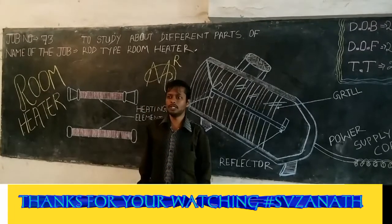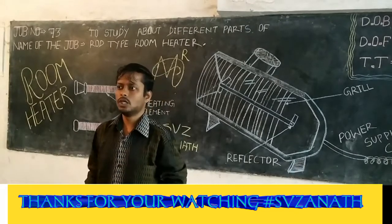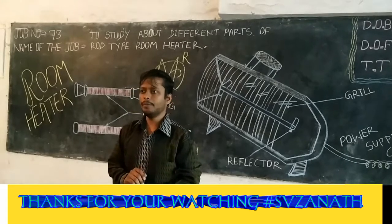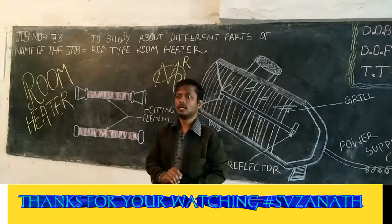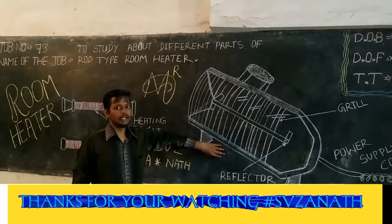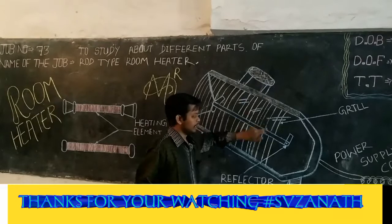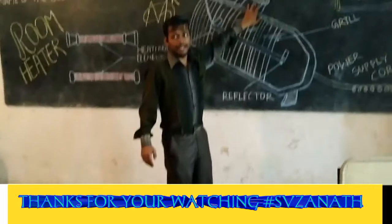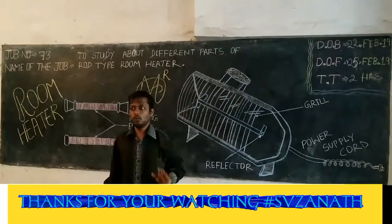We discuss about the construction of room heater. Today we discuss about the rod type room heater. Different parts of the rod type room heater are: handle, reflector, heating element, and grill. A handle is provided for small distance transportation of the room heater.